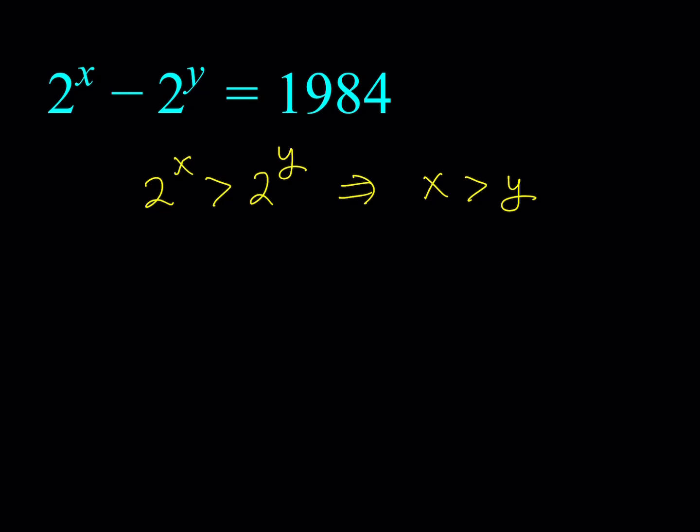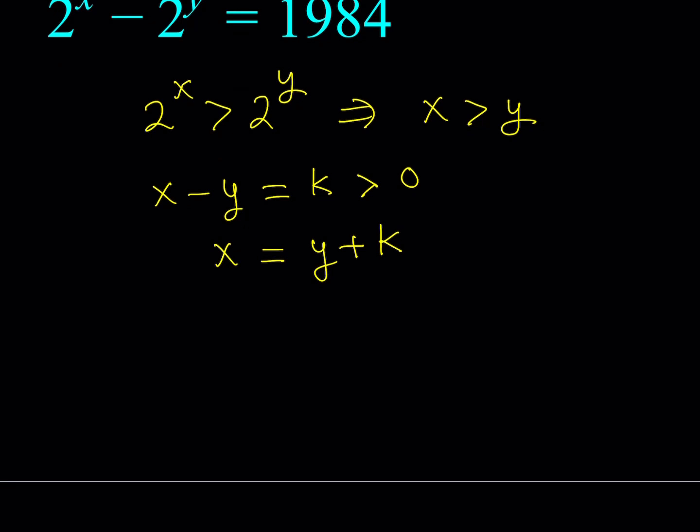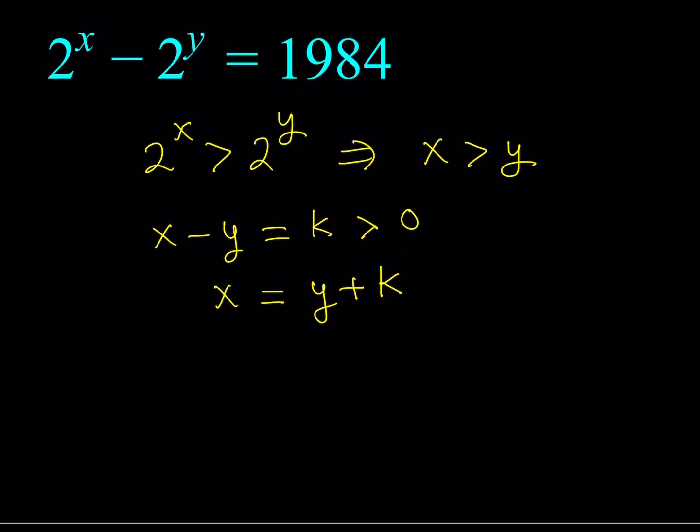Now, how does that help me? Since x is greater than y, their difference is going to be positive. So, I'm going to assume that x minus y is equal to k, where k is a positive integer. And, I'm going to go ahead and substitute this into my equation. But, I don't have an x minus y. No problem. I can just solve for x and replace x with y plus k in my equation. So, let's go ahead and do that and see what happens.